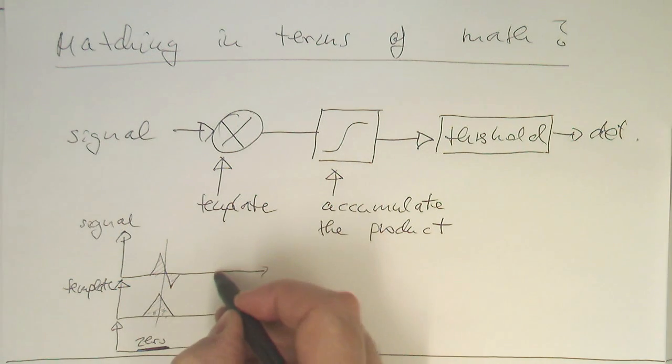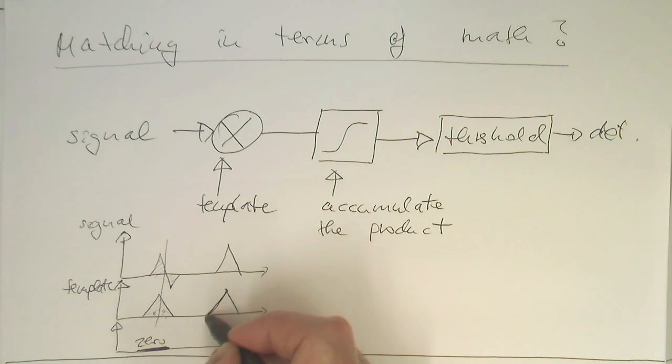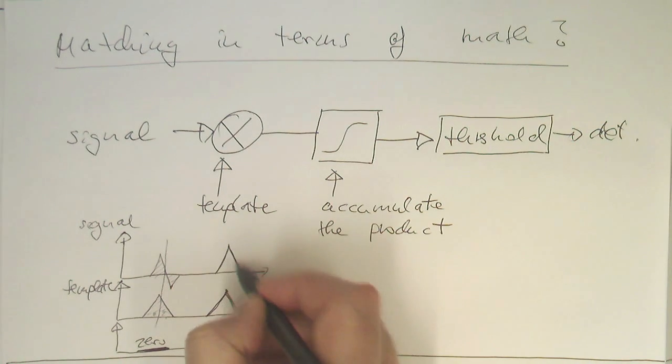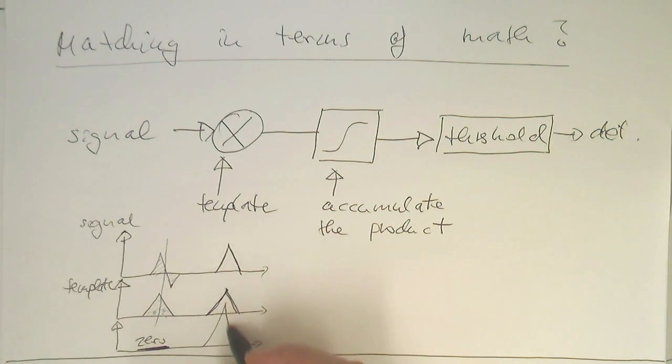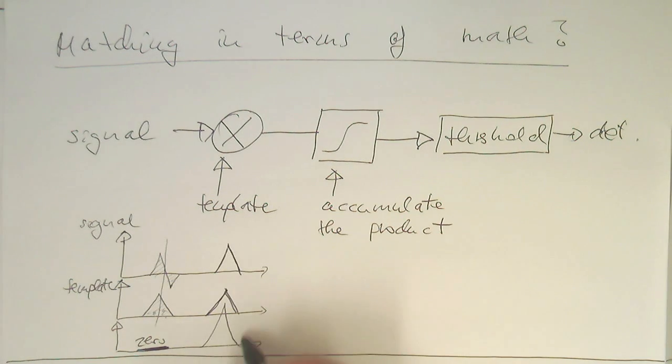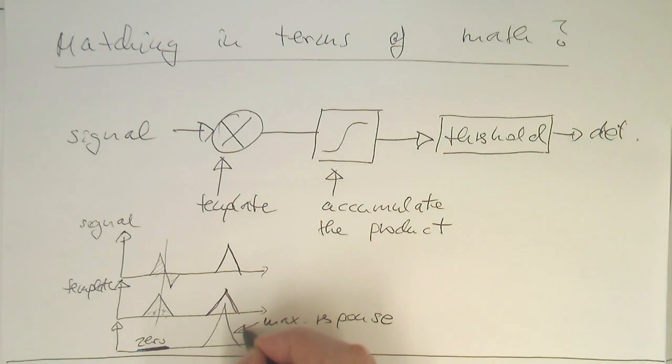However, if we have something like this which are looking totally identical here, then the product out of these two here generates us a squared version of these two. So, maximum response. So, that's the general idea of this correlation operation.